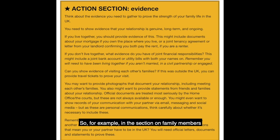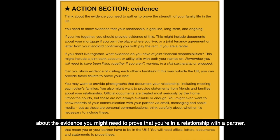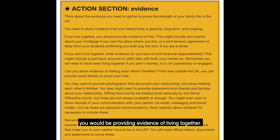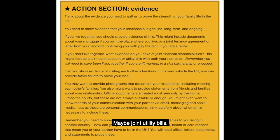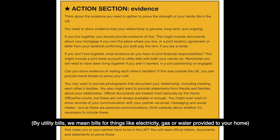In the Right to Remain toolkit, in the section on family members, there's an action section about the evidence you might need to prove you're in a relationship with a partner. If you live together, you would provide evidence of living together — so that might be documents about your mortgage, a joint tenancy agreement, or a letter from your landlord confirming you both pay the rent. Maybe joint utility bills — bills for things like electricity, gas, or water — or evidence of a joint bank account.